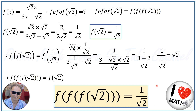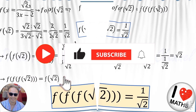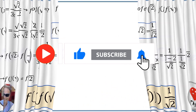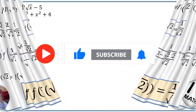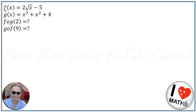Now we go to the second question. We have f(x) = 2√(x−5) and g(x) = x³ + x² + 4. We are asked to calculate f∘g(2) and g∘f(9). For f∘g(2), we first need to calculate g(2).